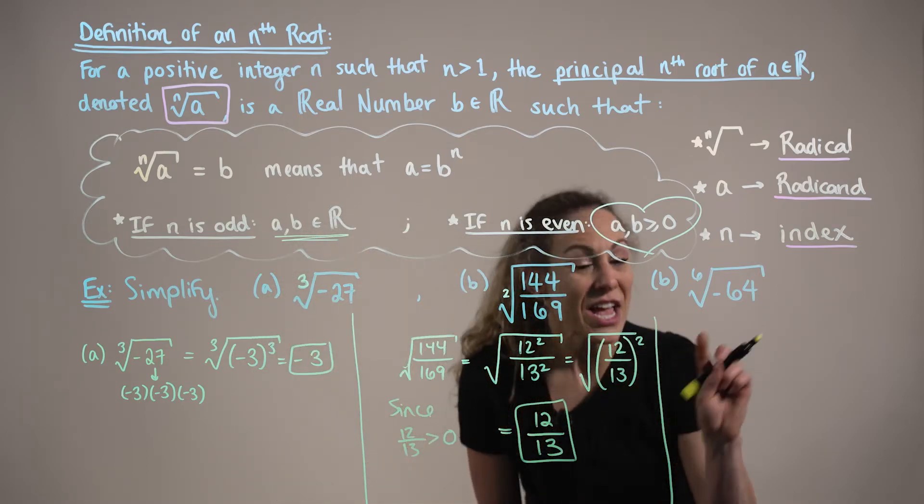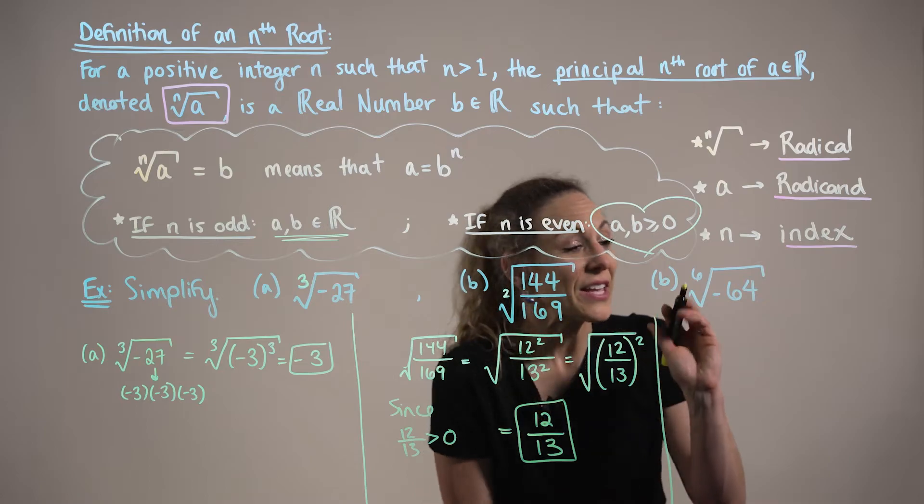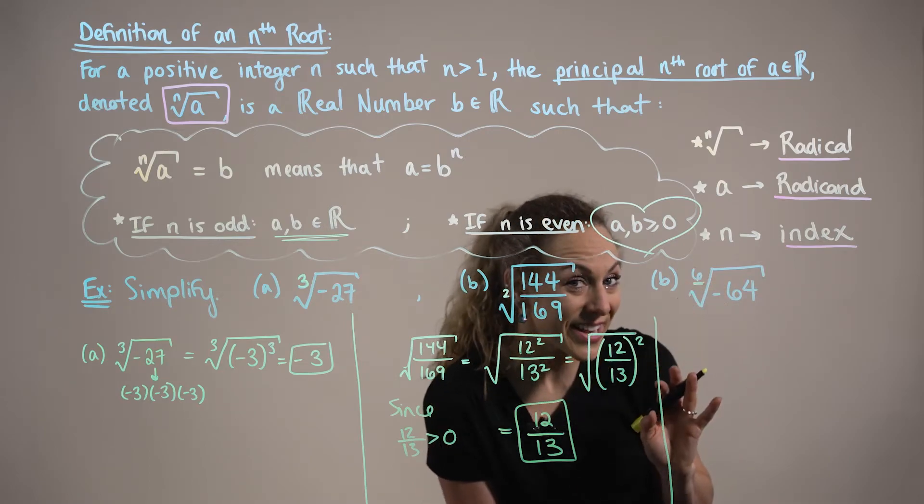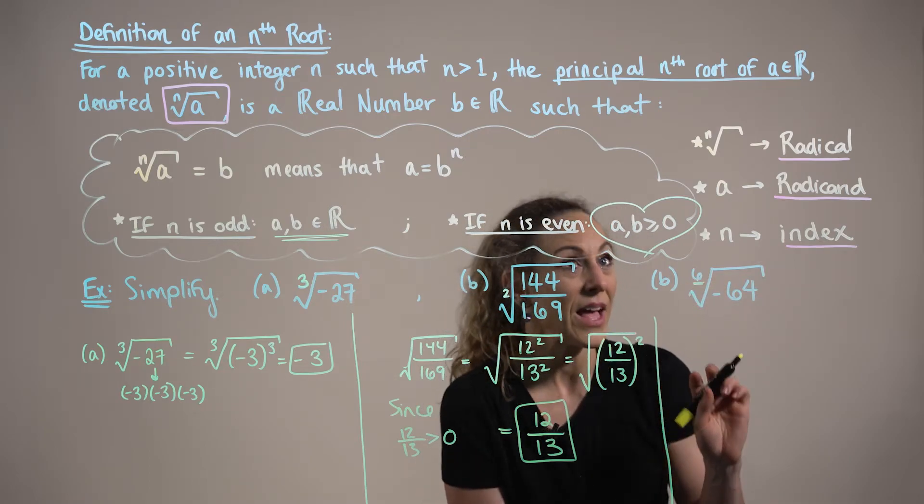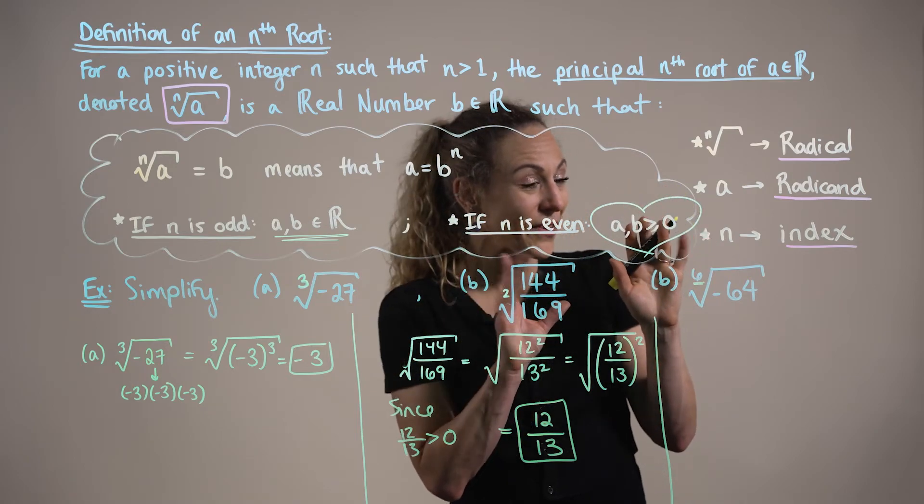And last but not least, in part c, here we have the number six as the index. So, again, we want to be careful of our definition here, being mindful that a and b must be non-negative.